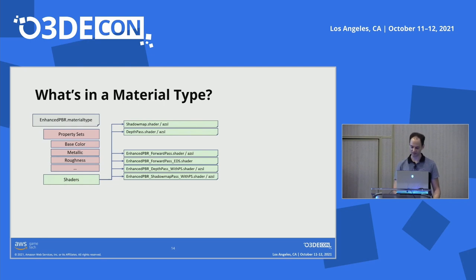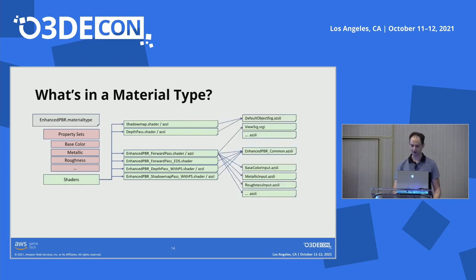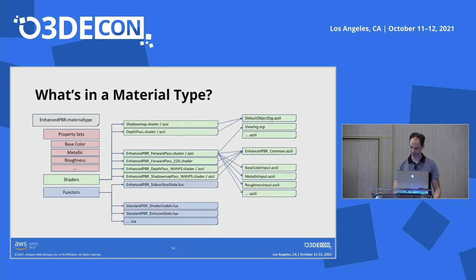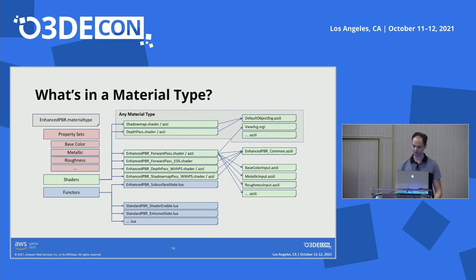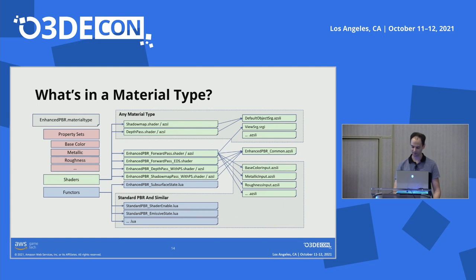There are also other utilities and AZSL files that can be included. Finally, we have material functors — small pieces of logic for processing material properties. They may transform the data in some way, then pass the results to the shaders as shader inputs. Atom provides a range of applicability for these files. Some are very general and can be used for any material type, some are for a range of materials similar to Standard PBR like Enhanced PBR, skin, and multi-layer PBR, and some are specific to a particular material type.